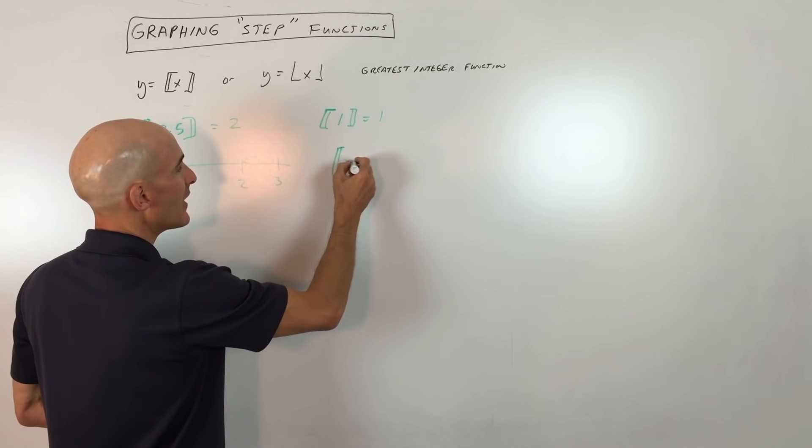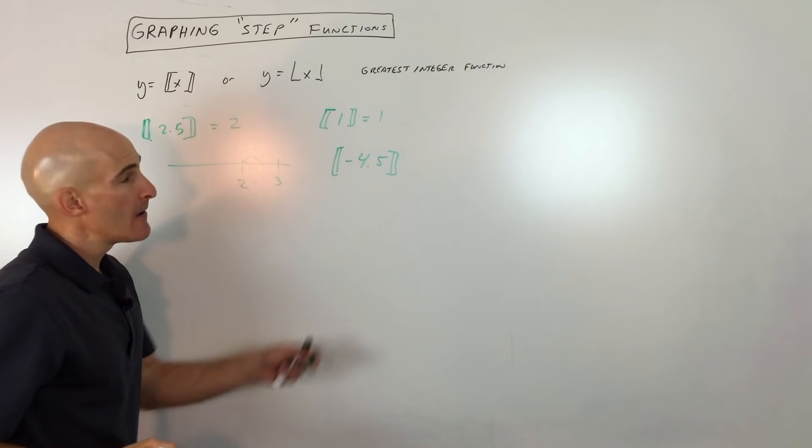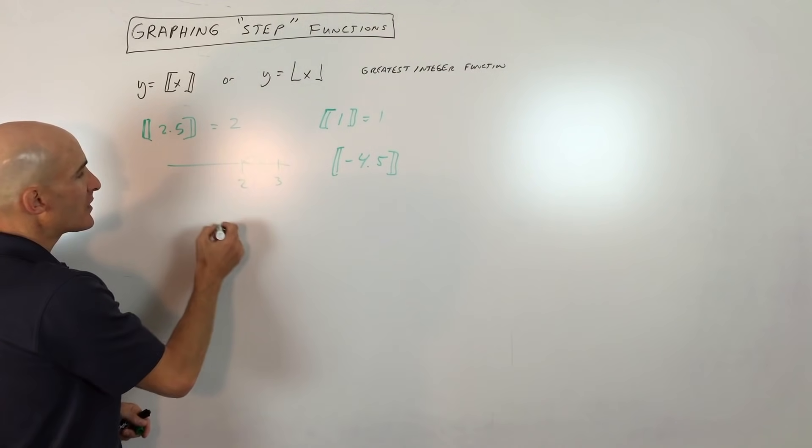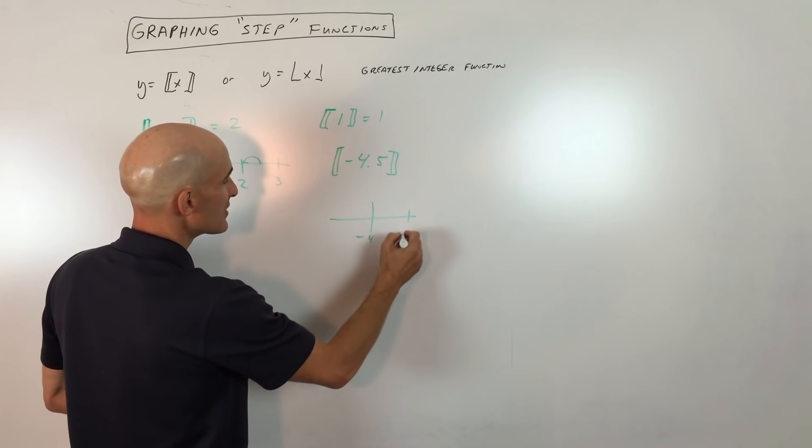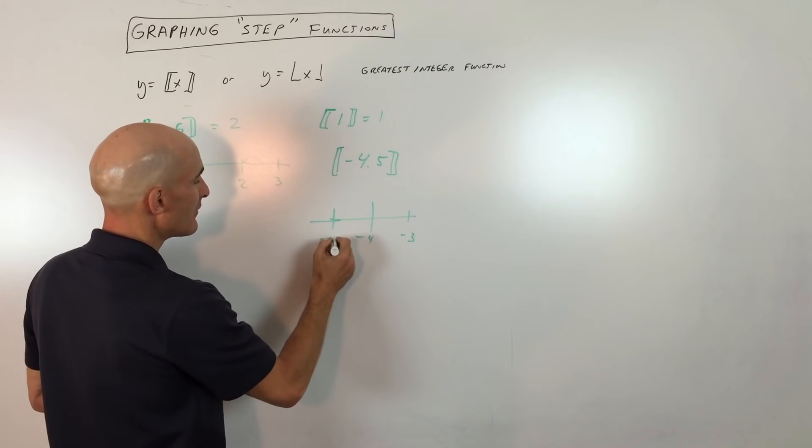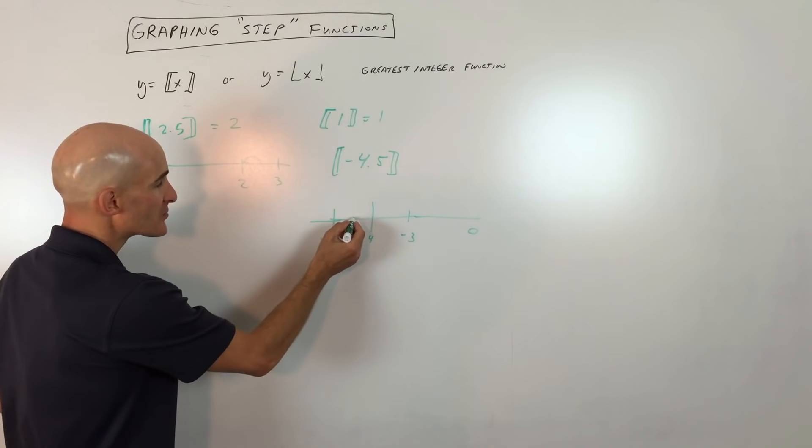Now, say for example, it was like a negative value. This is where students sometimes go off the track, so to speak. ⌊-4.5⌋. So if we look at a number line here, here's negative 4.5. Well, here's negative 4. Here's negative 3. Here's negative 5. And here's 0 way over here.